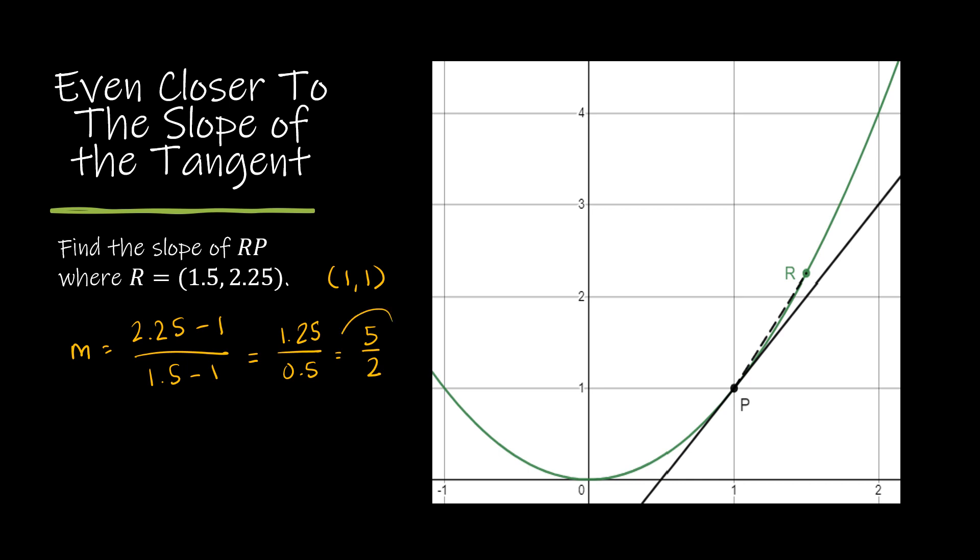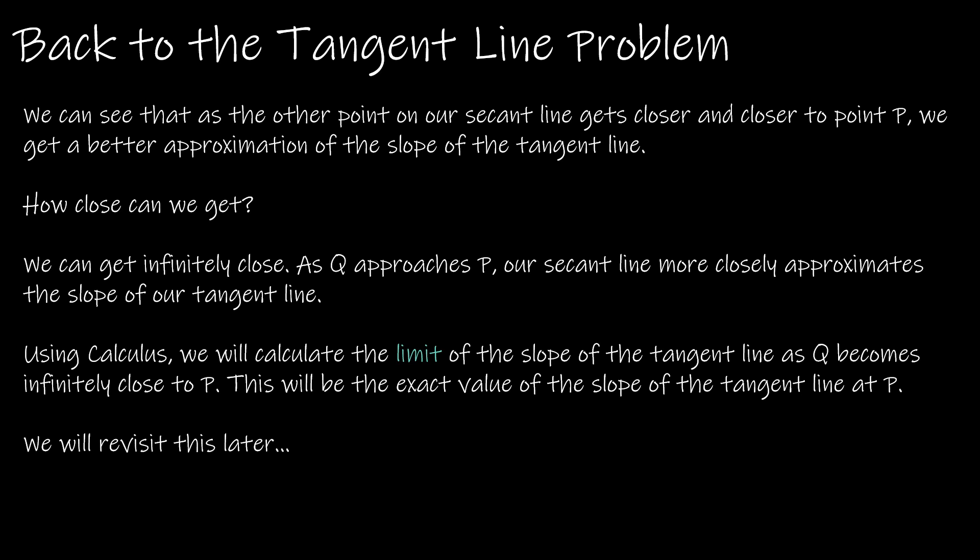Five halves is a decent approximation. You might be saying, yeah, I got it, we already can see that the slope of this line is two. And that's true, but we're looking for how to generalize. We found a point that's close, we found a point that's closer. It would make sense if I chose another point that was closer to P than R was, that I would get closer to that exact value of two. So how close can we get? How close can that new point that creates the secant line get to our original point P?